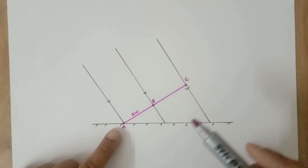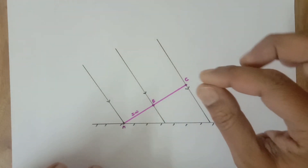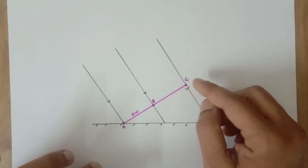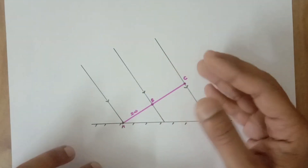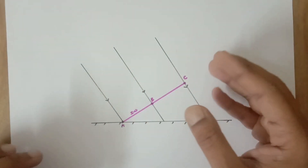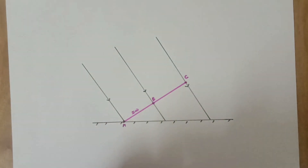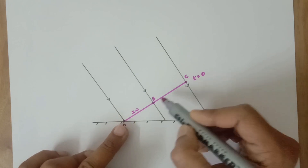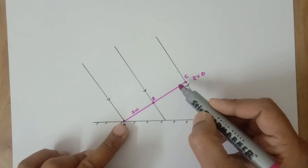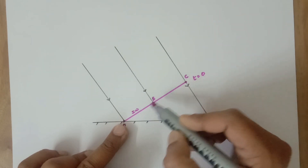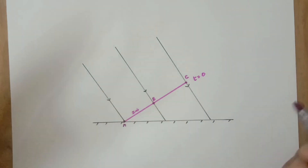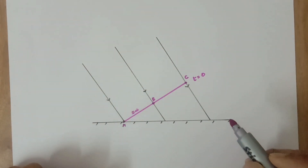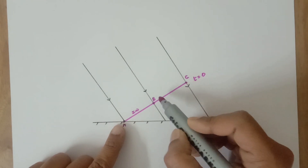This is just like when you put a stone in still water and ripples are created. You can imagine those ripples in three dimensions as spherical waves. At time t = 0, spherical waves from points A, B, and C start simultaneously, because all three points are on the wavefront and as per Huygens' principle they behave as secondary sources.